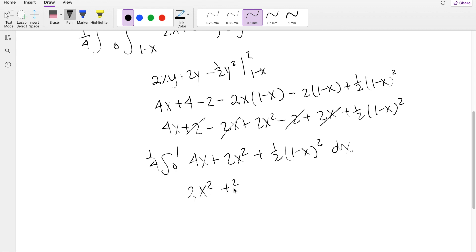Plus 2 thirds X cubed, plus 1 sixth times 1 minus X cubed. And actually this has a chain rule in there, so it's going to be negative here, going from 0 to 1, times 1 fourth.